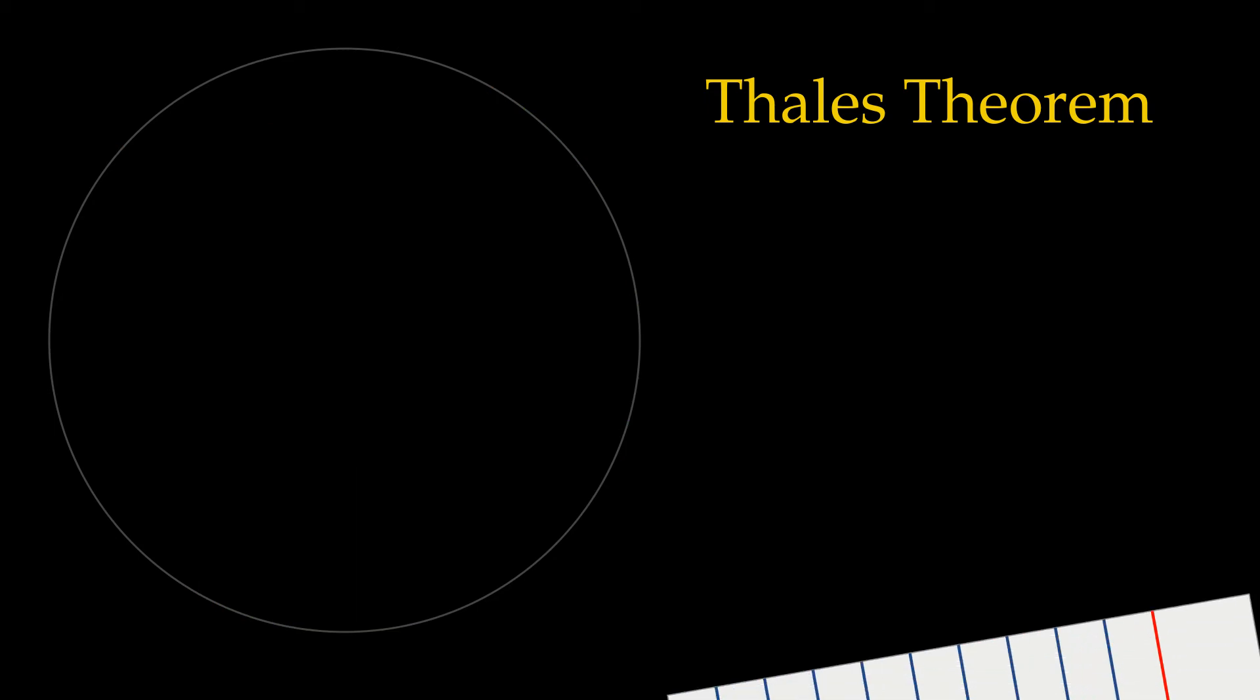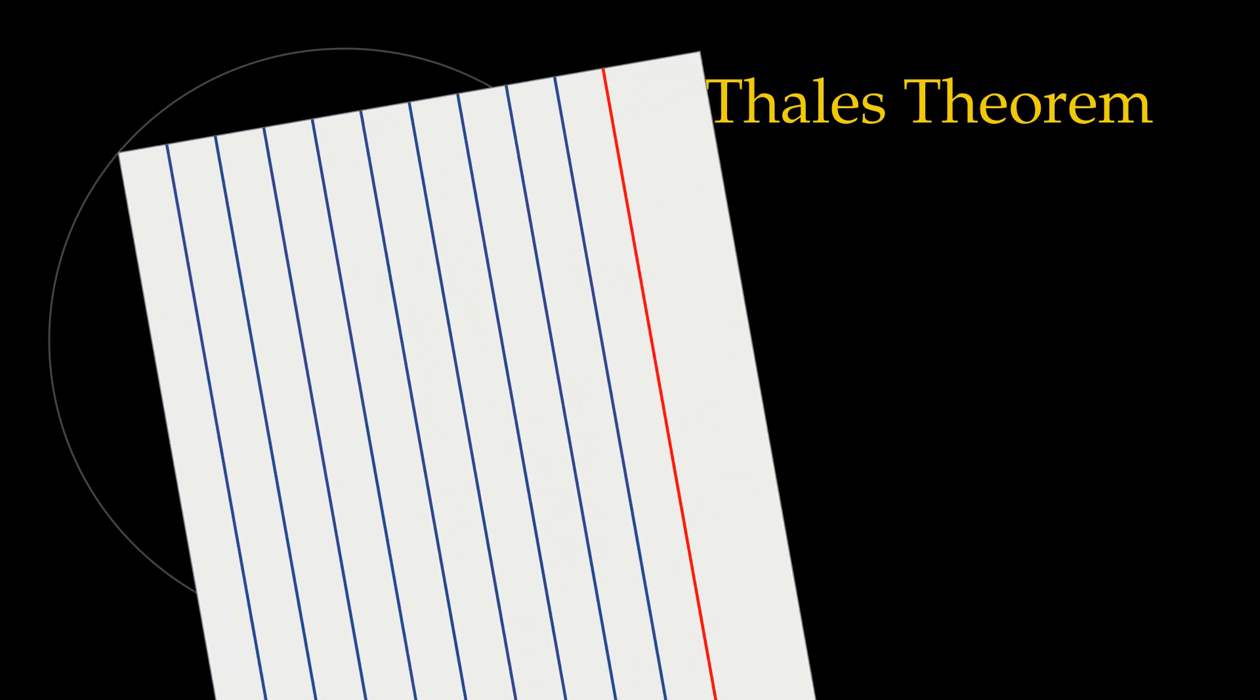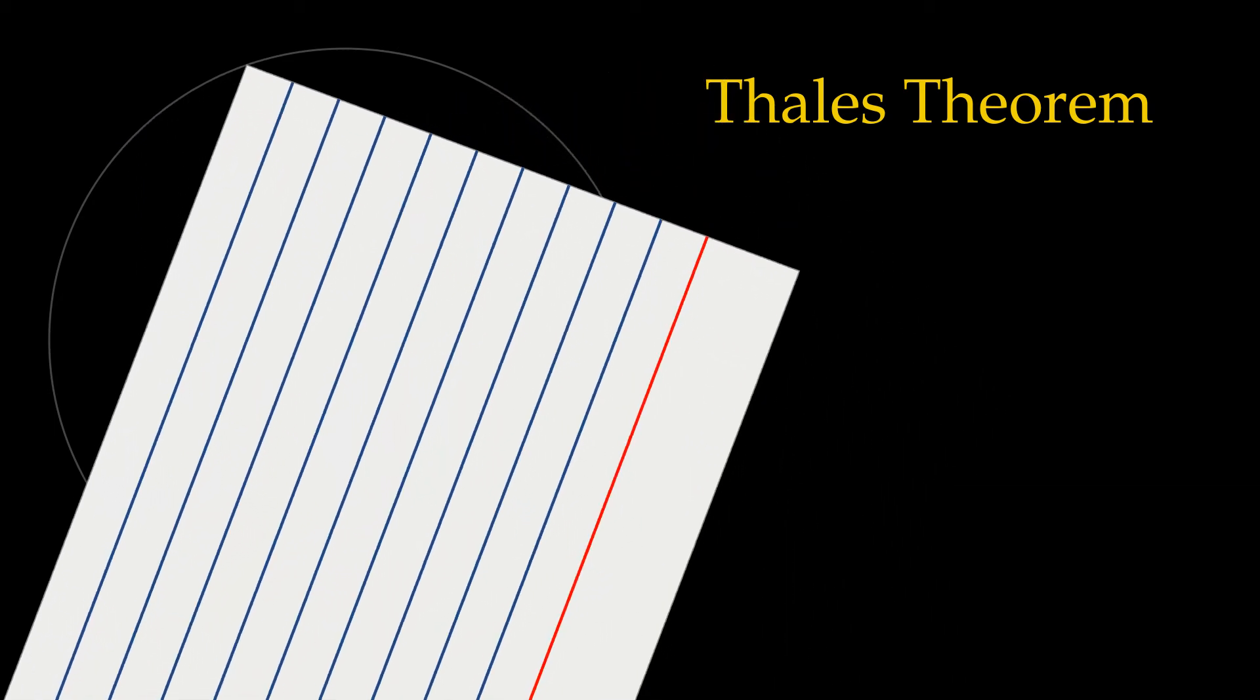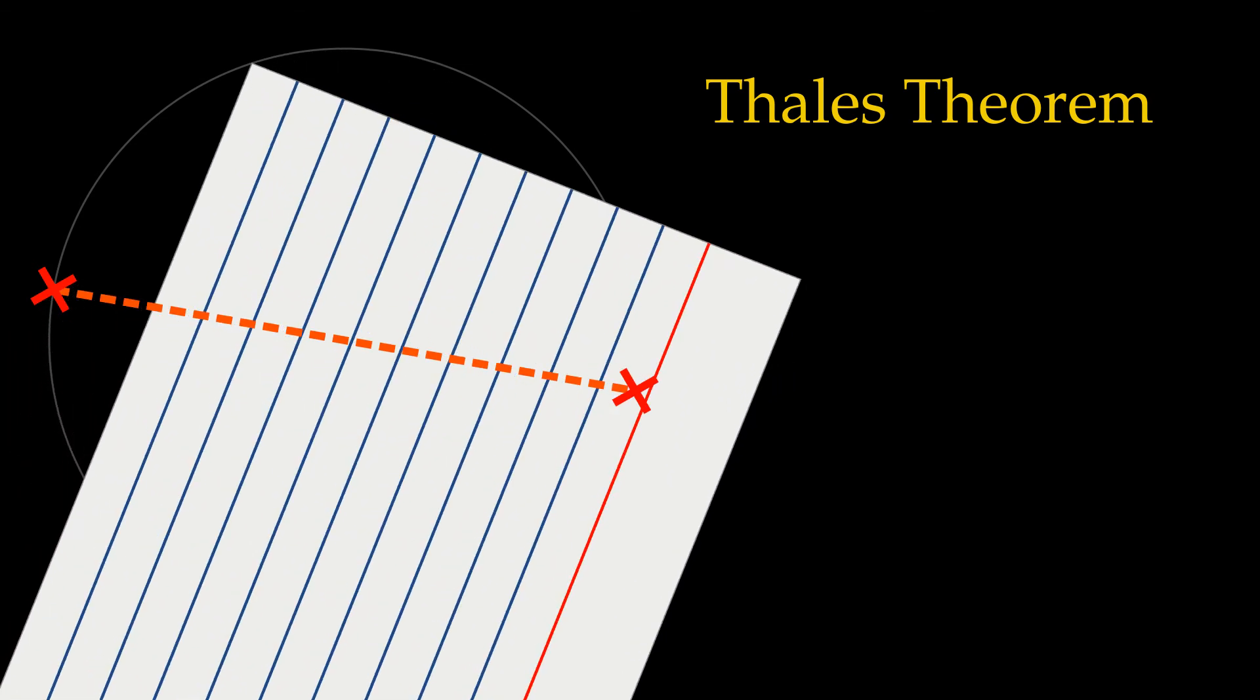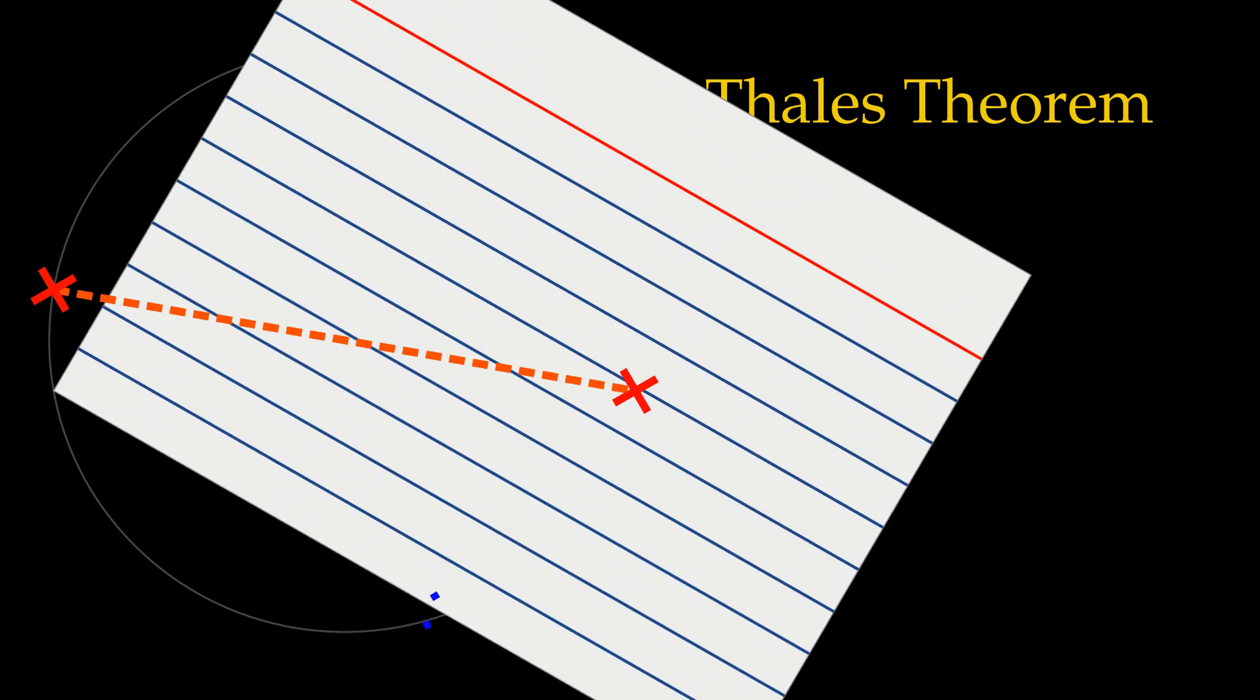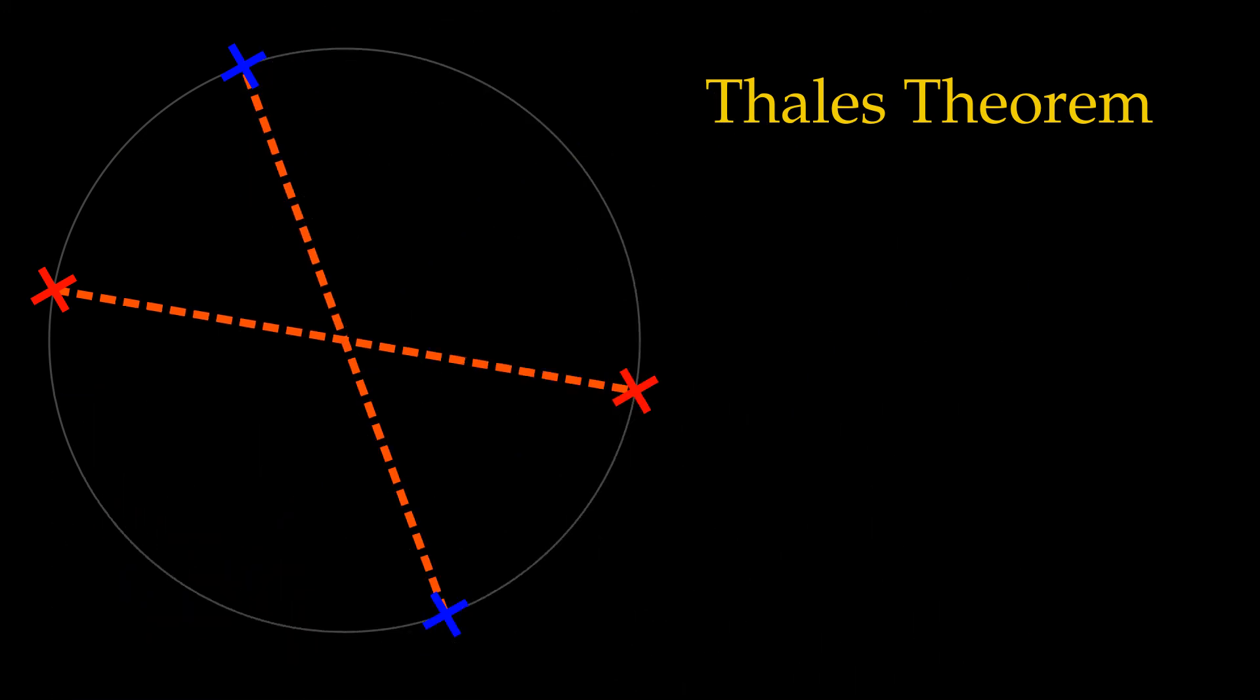A practical application is finding the center of a circle. A right angle whose vertex is on the circle always cuts off a diameter of the circle, since the diameter passes through the center. By drawing two such diameters, the center is found at the point where the diameters intersect.